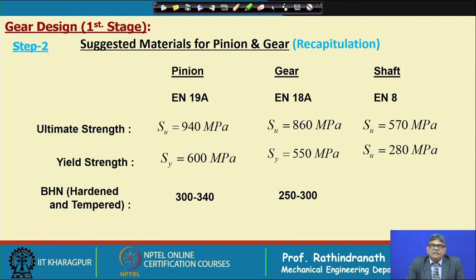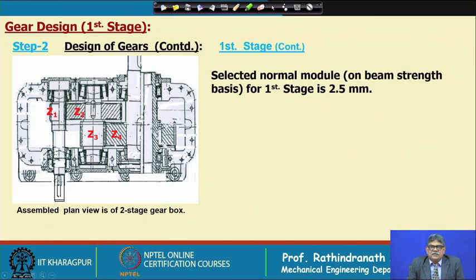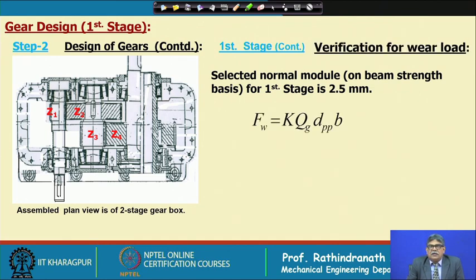The shaft is not hardened unless necessary. For the first-stage design the selected normal module is 2.5 mm. The allowable strength has been taken as yield strength divided by 2.5 in both cases, and with the velocity factor Cv and wear factor Cw, we have already confirmed that module 2.5 mm is satisfactory.